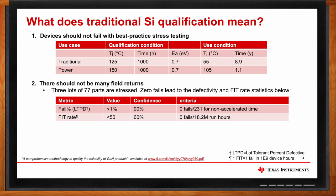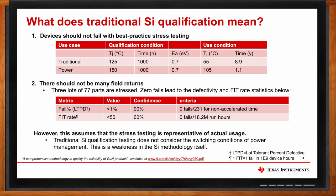Second, there should not be many field returns. Many people wonder why we use three lots of 77 parts — that is to provide an answer to this question. The LTPD figure of merit, the lot-tolerant percent defective number, means that if there are zero fails out of 231 parts, we can say with a high level of confidence that there'll be less than 1% failure rate. The second figure of merit is the FIT rate — one FIT is one fail in 10 to the 9 operating hours — and we can say with a medium level of confidence that the FIT rate will be less than 50. The key point is it assumes that the applied stress is representative of actual use conditions. Traditional testing is not representative of the switching conditions of power supply usage, which is a weakness in the silicon methodology itself.